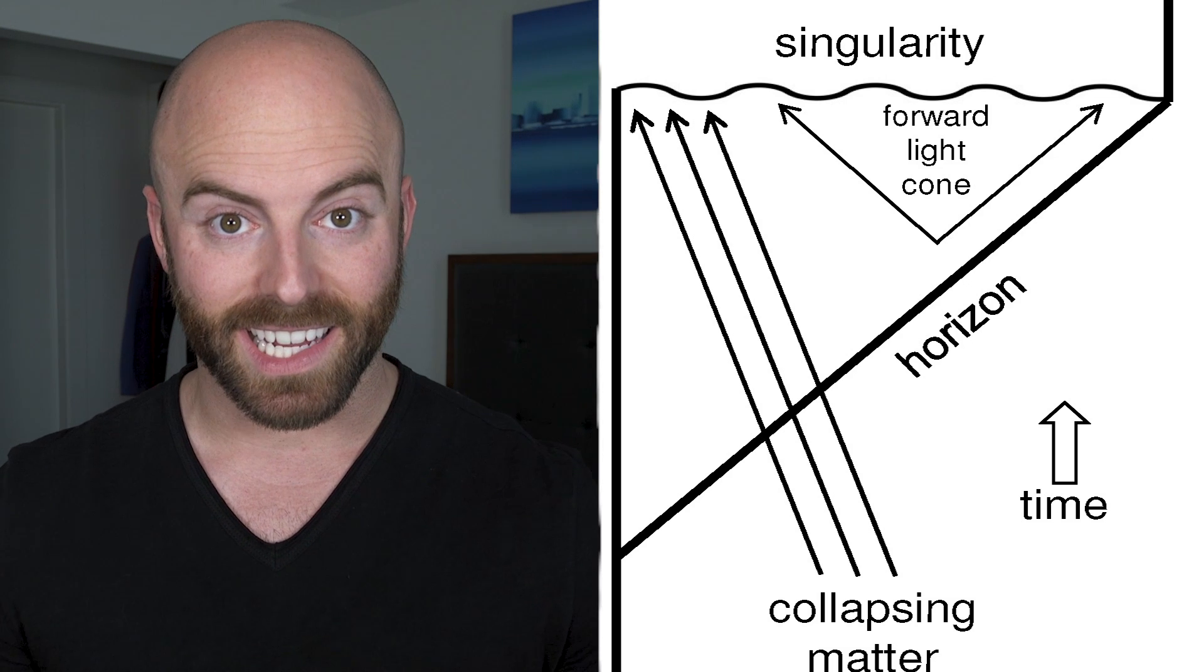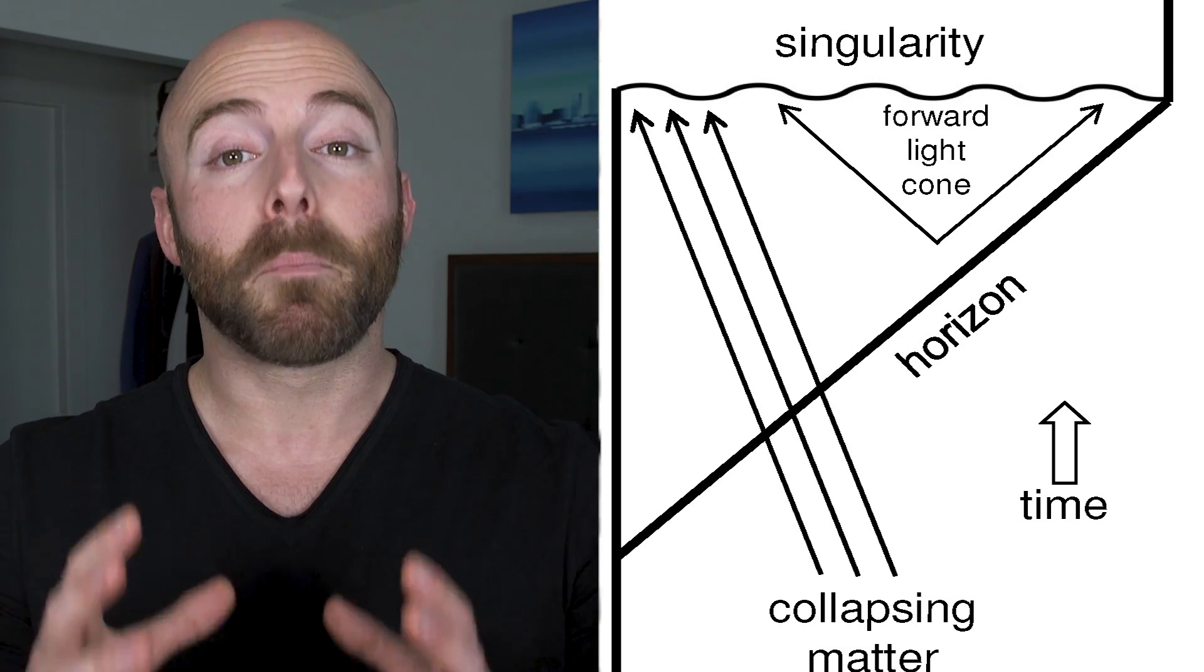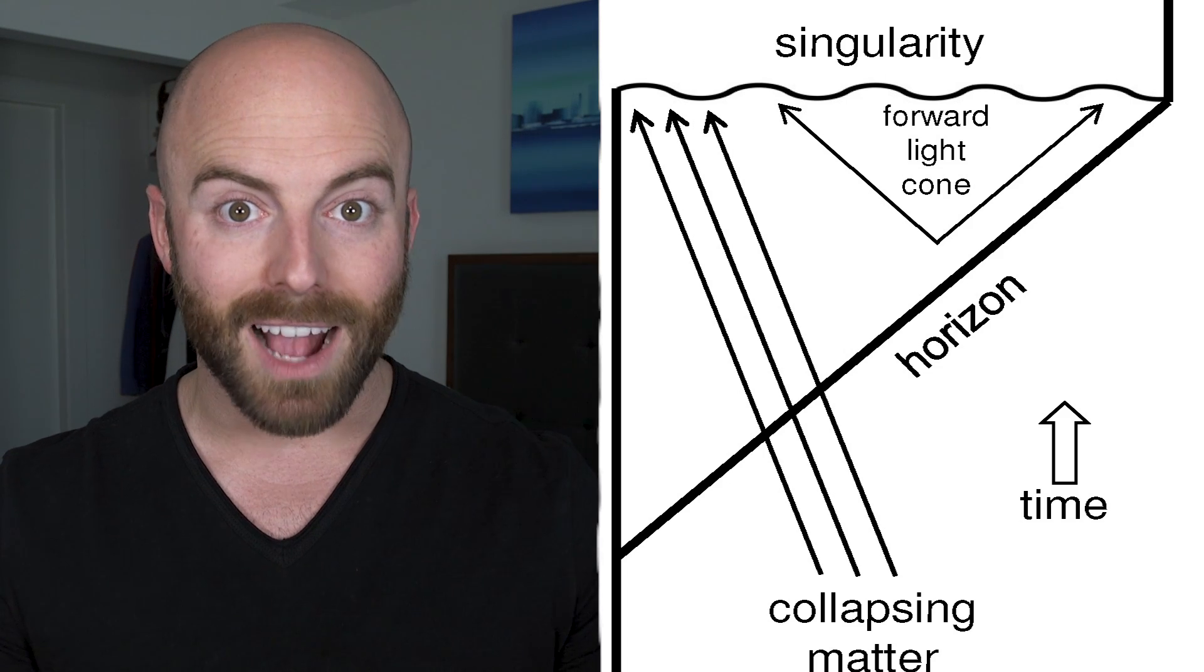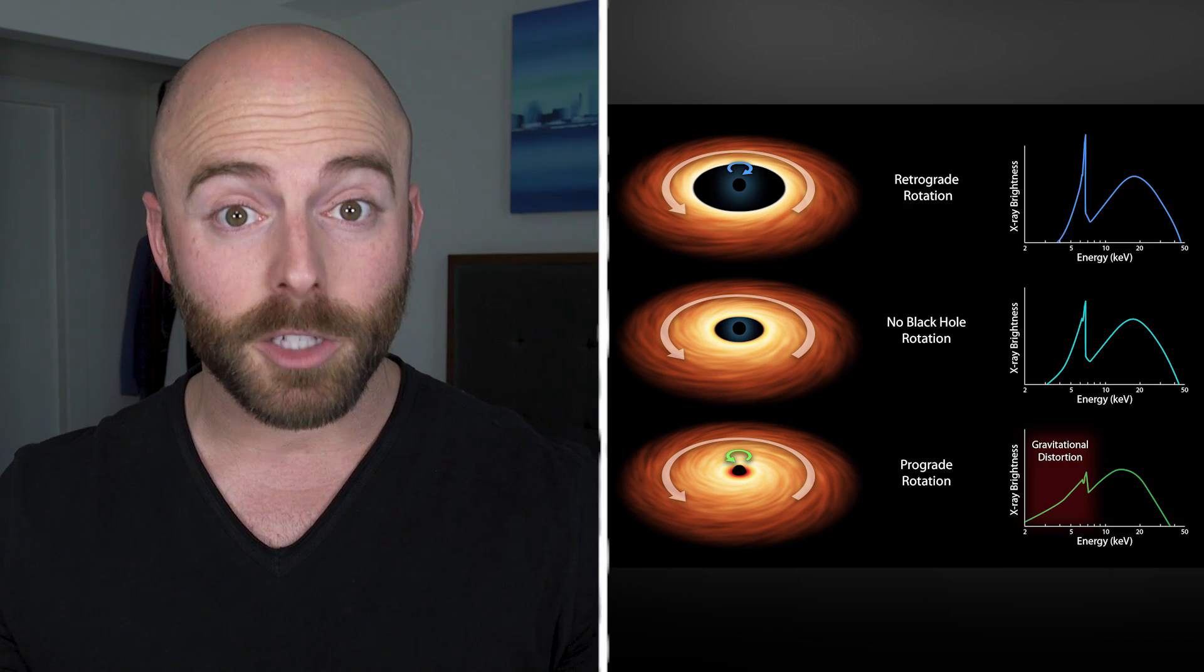Also known as a space-time singularity, a gravitational singularity is what many physicists believe lies at the center of a black hole. It's a point where matter has become so condensed that the gravitational field becomes almost infinite. When this occurs, space and time as we know it breaks down.